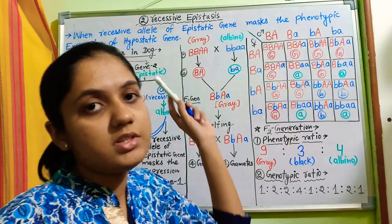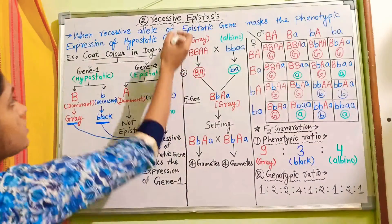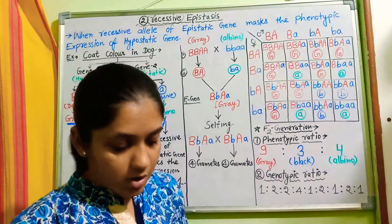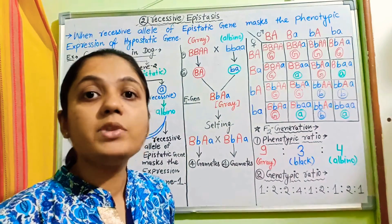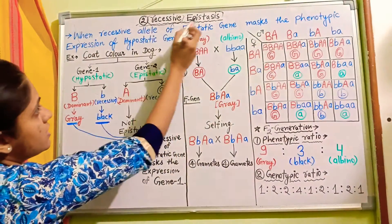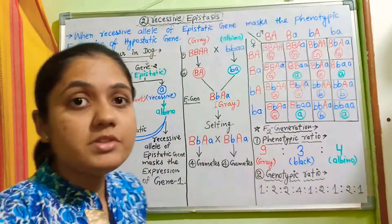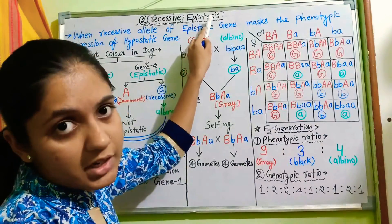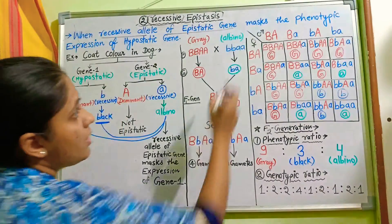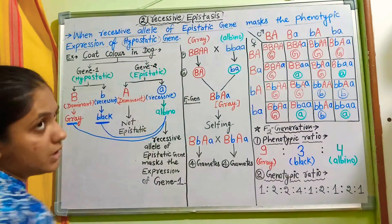We can understand the definition of recessive epistasis from its name. The word 'recessive' refers to the recessive allele — specifically the recessive allele of the epistatic gene. So in recessive epistasis, the allele responsible for epistasis is the recessive allele of the epistatic gene. The definition is: when the recessive allele of the epistatic gene masks or suppresses the phenotypic expression of the hypostatic gene completely.